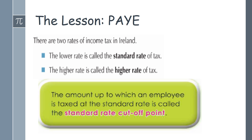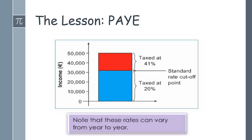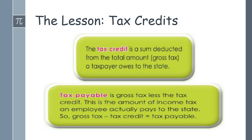Moving on to the PAYE section, we explain to students that there are two different rates: a lower rate and a higher rate, with a standard rate cutoff. The graph on the slide shows that, for example, a person who earns €50,000 with a standard cutoff rate of €30,000 has the first €30,000 taxed at 20% (marked in blue) and the following €20,000 taxed at 41% (marked in red). It's important to remember these percentages may change year on year depending on what's announced in the budget in October — once again, there are cross-curricular links with Business and CSPE. We then explain to students what tax credits are and what tax payable is — more keywords and new vocabulary for them.